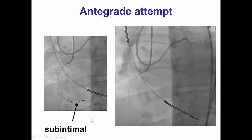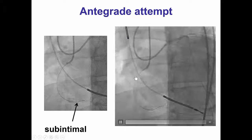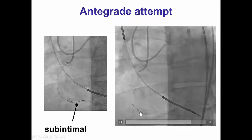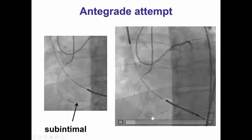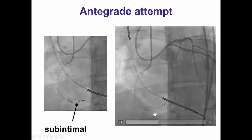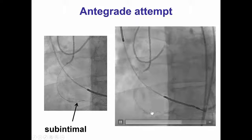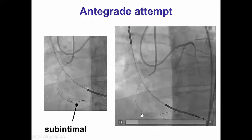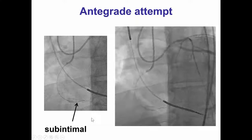We initially tried an antegrade crossing attempt; however, the antegrade guidewire went sub-intimally and we were unable to re-enter into the distal true lumen. As you can see, we have a fairly extensive sub-intimal hematoma in the distal right coronary artery.